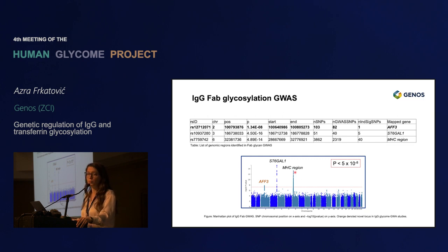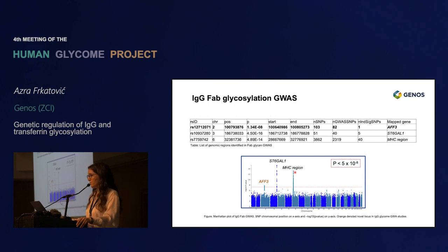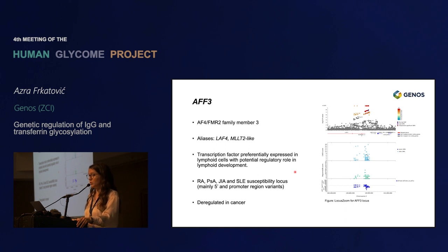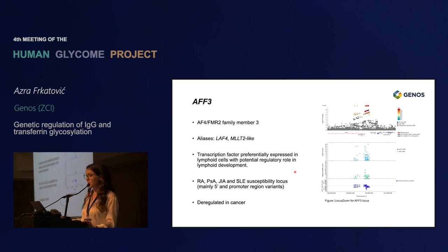It would be really hard at this point to identify specific genes involved in the MHC region, but we do see that there is indeed genetic control of the FAB glycosylation pathway. There is also one novel association seen for the first time in IgG, transferrin, or plasma glycan GWAS — the association with the AFF3 gene on chromosome 2. This is a putative transcription factor preferentially expressed in lymphoid cells with a potential regulatory role in lymphoid development. It has also been associated with rheumatoid arthritis, psoriatic arthritis, juvenile idiopathic arthritis, and lupus, and has been shown to be deregulated in cancer.